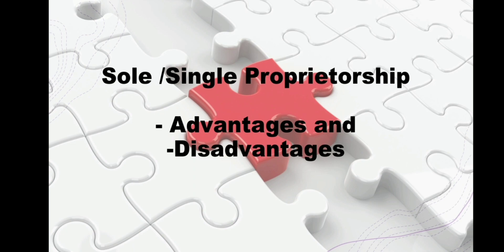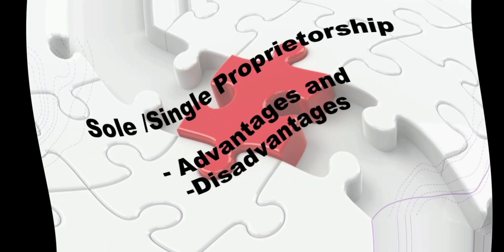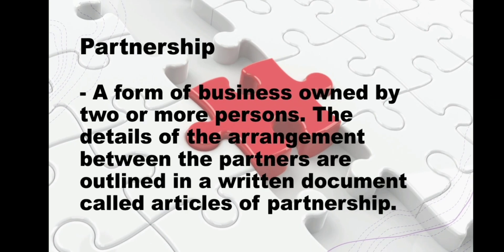Second, we have a partnership. It is a form of business owned by two or more persons. The details of the arrangement between the partners are outlined in a written document called the article of partnership.